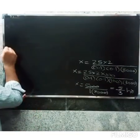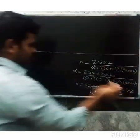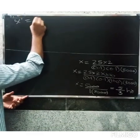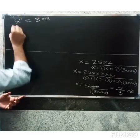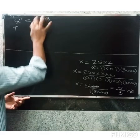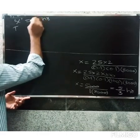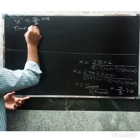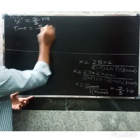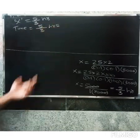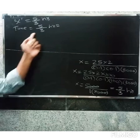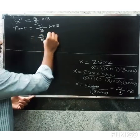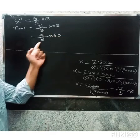Time equals 5 divided by 3 hours. Converting to minutes: 5 divided by 3 into 60 equals 100 minutes.